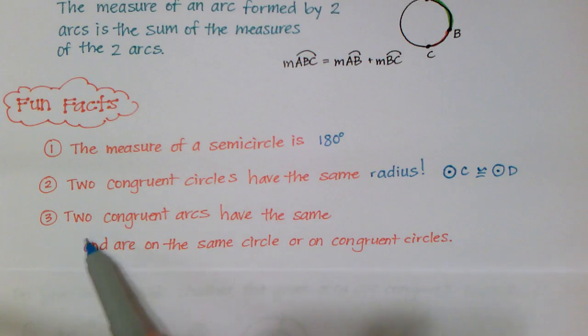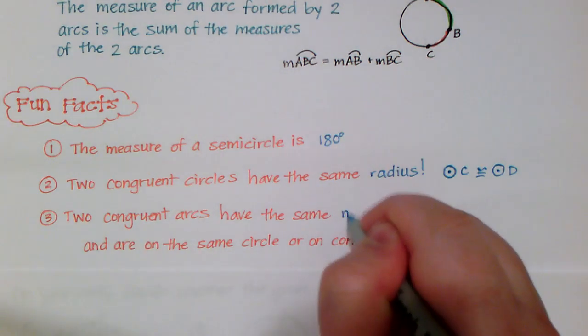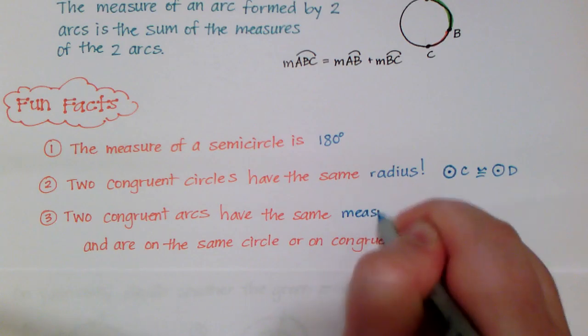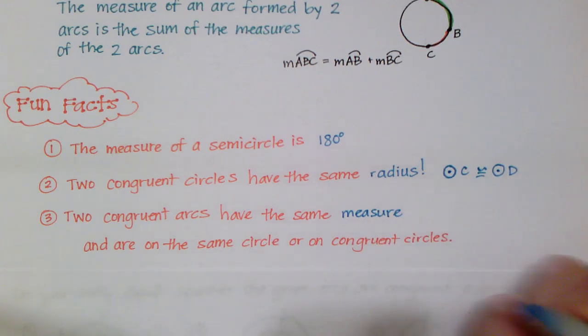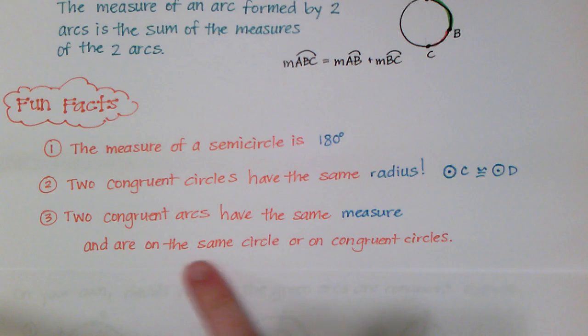The last thing I wanted to write is that two congruent arcs have the same measure and are on the same circle or on congruent circles. So, it's really important that you pay attention to that ending part. Two congruent arcs have the same measure and are on the same circle or on congruent circles. So, either one of those has to be true.